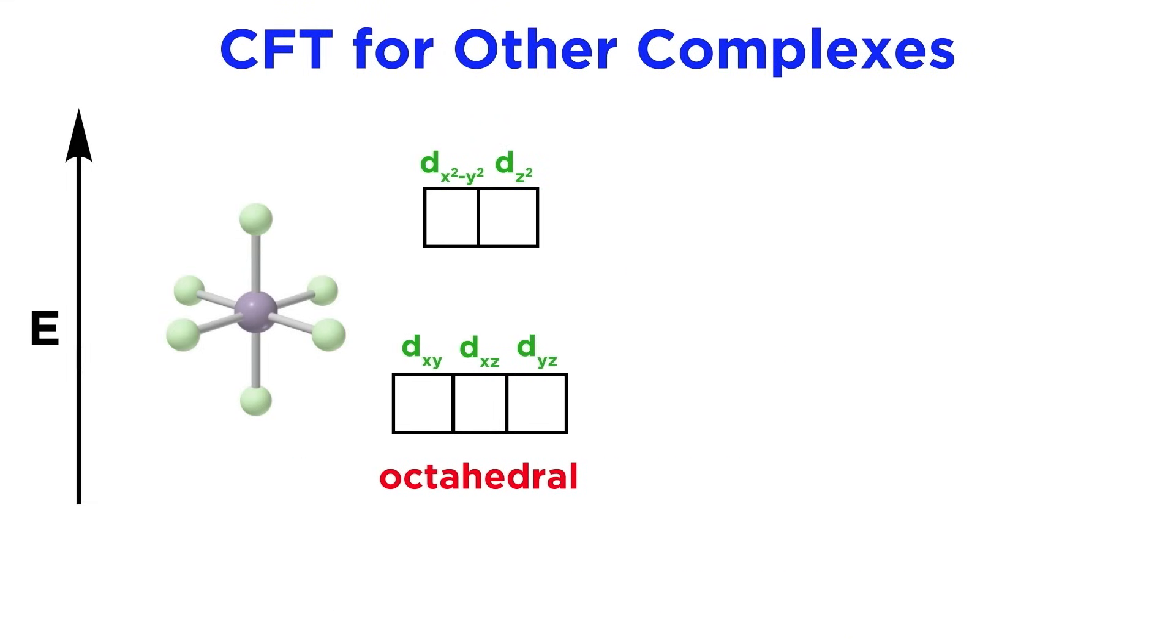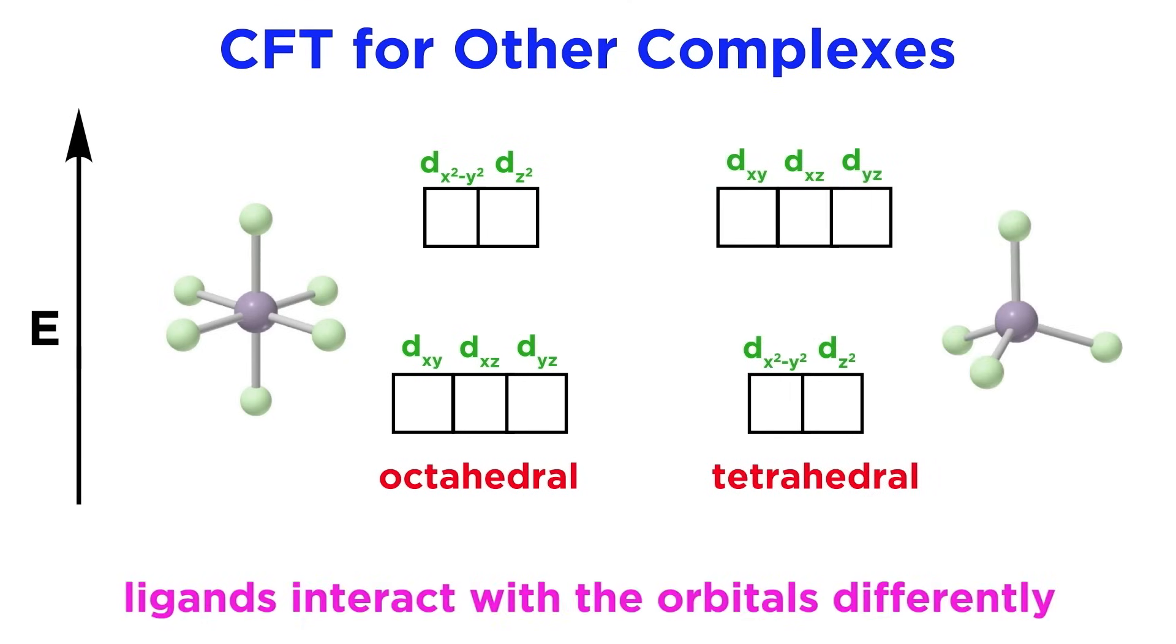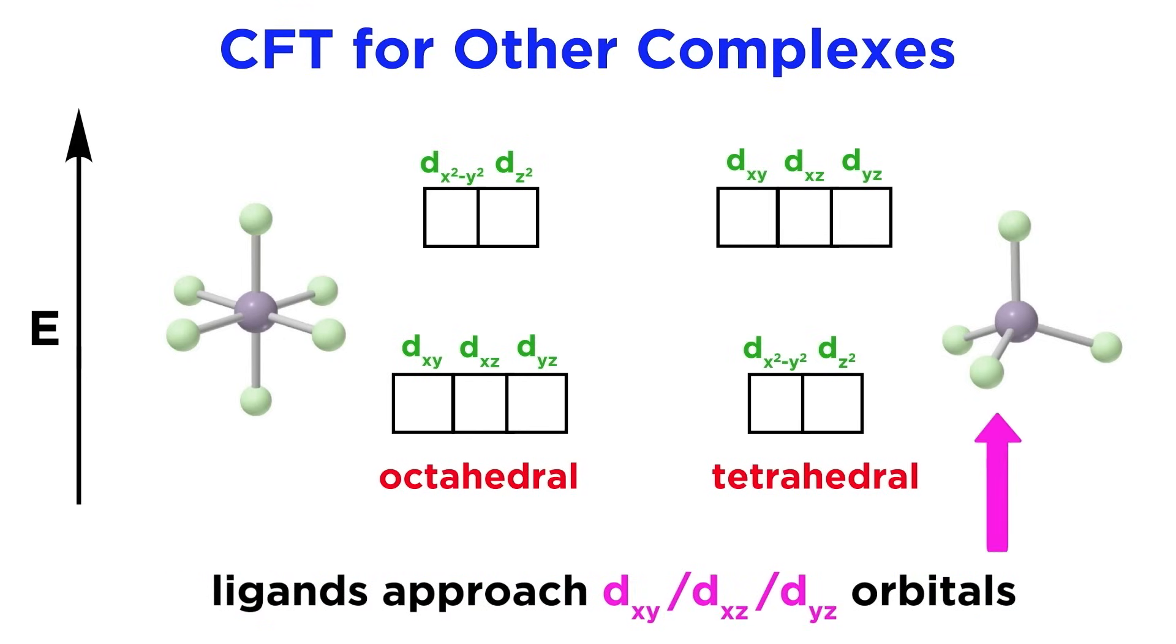Crystal field theory works for geometries other than octahedral as well, like tetrahedral, which tend to be high spin, but the ligands orient themselves differently, so they interact with the orbitals differently, and we get different energy diagrams. Specifically, with this geometry, ligands more closely approach the d orbitals between the axes, rather than the orbitals on the axes. So the higher energy orbitals are precisely the opposite ones as in the case of octahedral geometry.